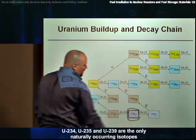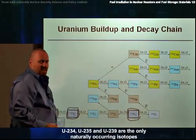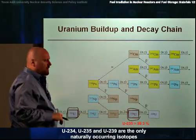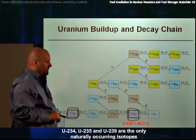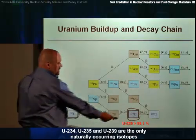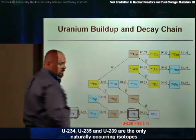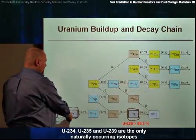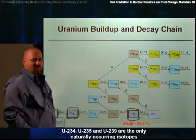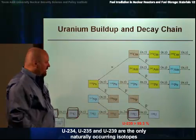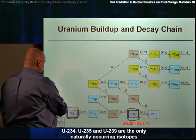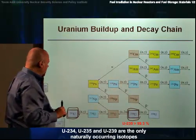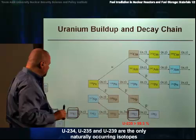Of those naturally occurring isotopes, 99.3% of all naturally occurring uranium is U-238. Only a very small fraction, 0.7%, is U-235. And there is a very small fraction of U-234, much less than that.